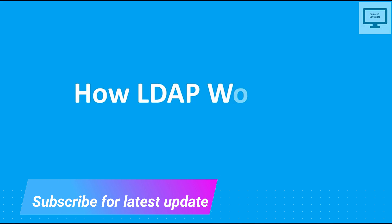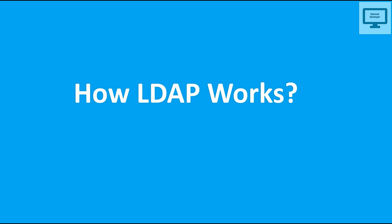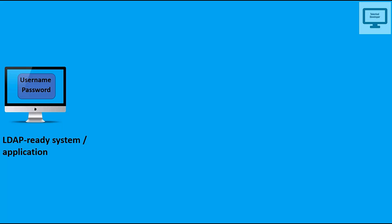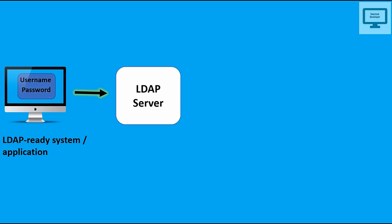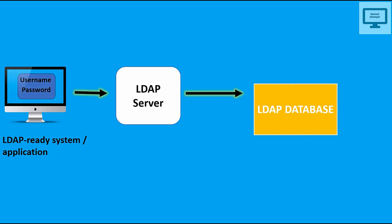So how does LDAP work? LDAP authentication follows the client-server model. The client side is an LDAP-ready system or application that is requesting information from the associated LDAP database. Once we enter the credentials, they go to the LDAP server, which is associated with the LDAP database, and it will try to authenticate and give back a response.